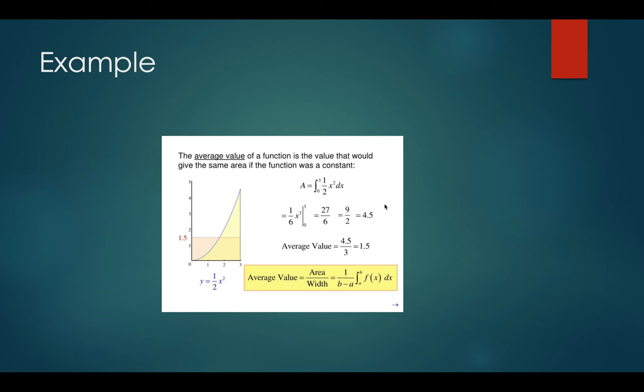And so when we plug in the 3, we get 27 over 6, and then when we plug in 0, we get 0. So we have 27 over 6, which is 9 halves, which is 4.5.